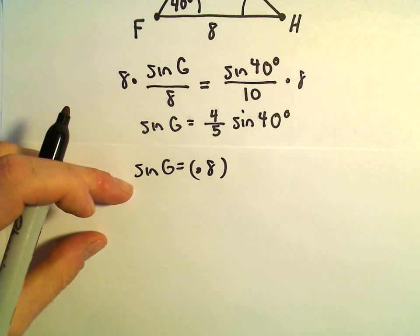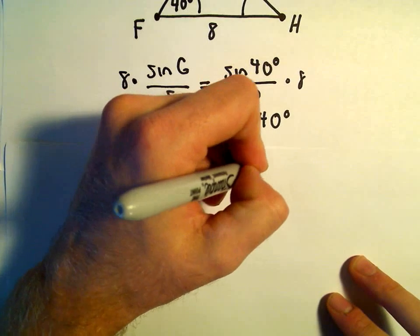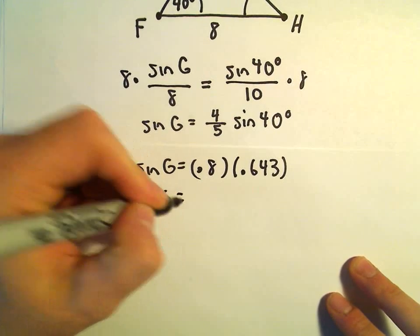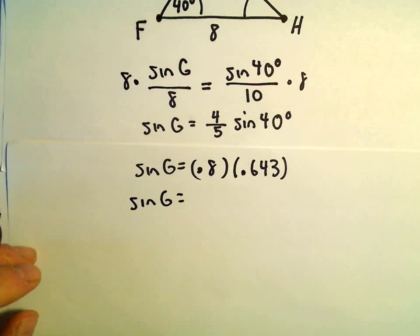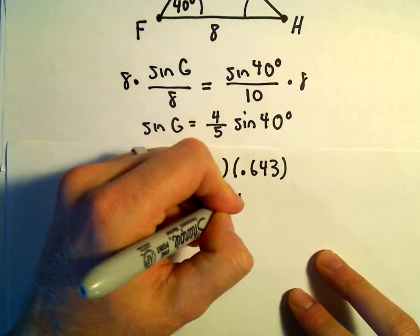I'm getting that to be 0.643. So if we take 0.8 and multiply that by 0.643, I'm getting that to be 0.5144.